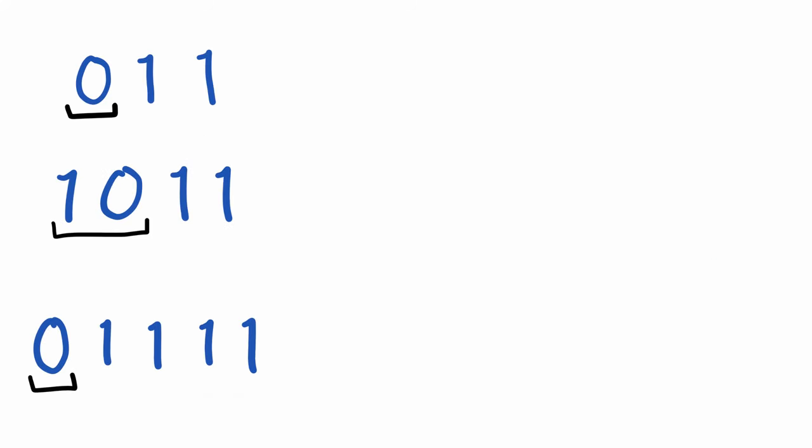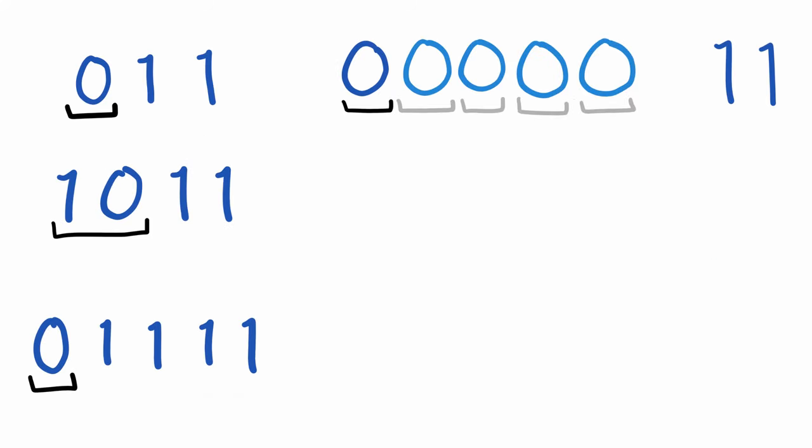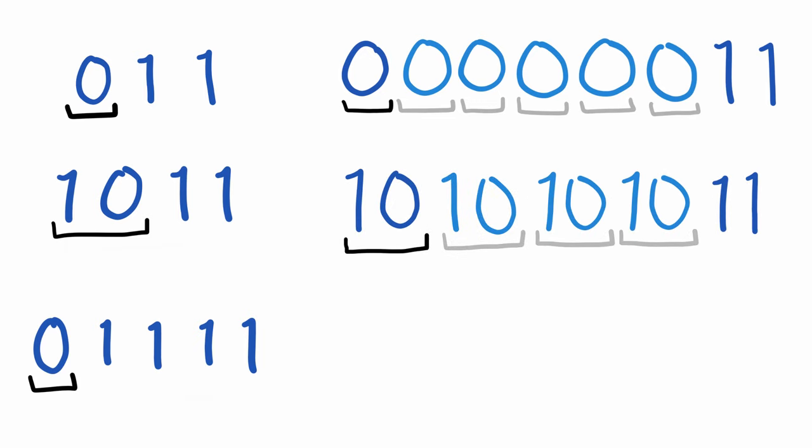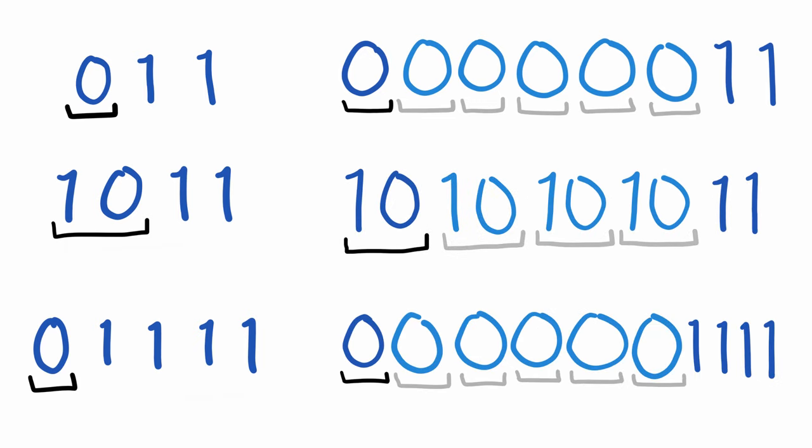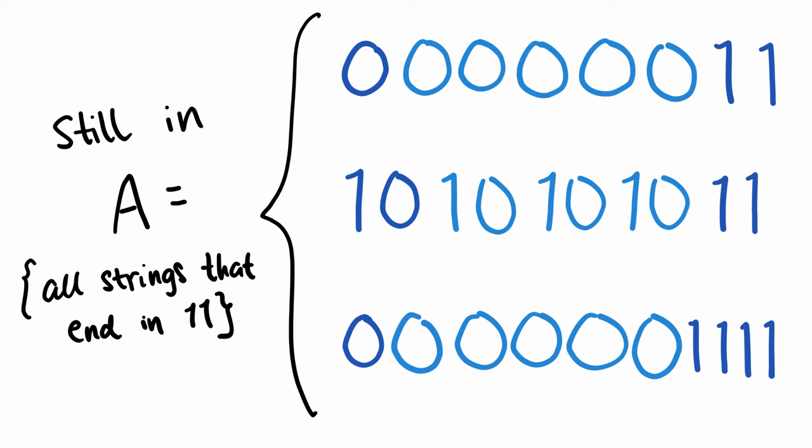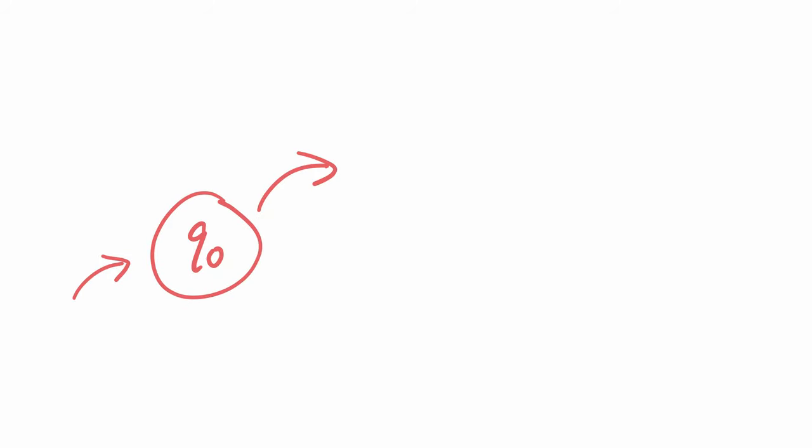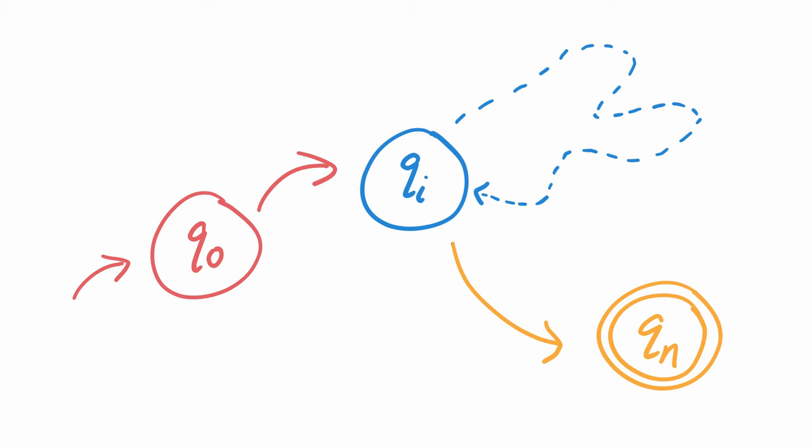And for each of these substrings, the pumping lemma states that we can pump them as many times as we want, and the resulting string will still be in the language. Now notice how we can separate these strings into the part before pumping, the part being pumped, and the part that takes us to the accept state.